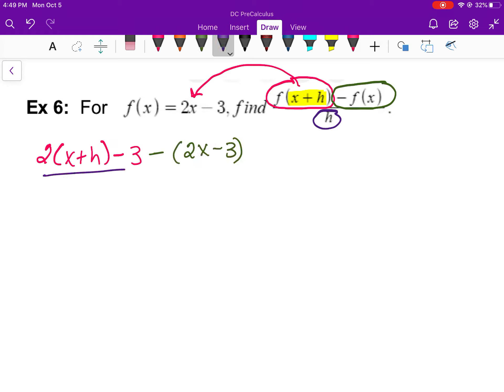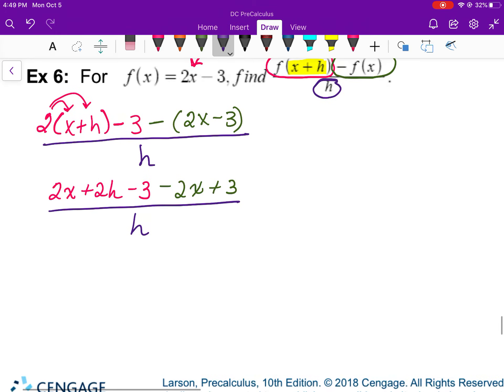And then I'm going to subtract my original function, which is 2x minus 3, and divide all of that by h. Then to finish it off, I will use the distributive property. I'm going to keep on simplifying. I noticed that those two added to 0, those two added to 0. 2h divided by h is 2. So my difference quotient is 2.